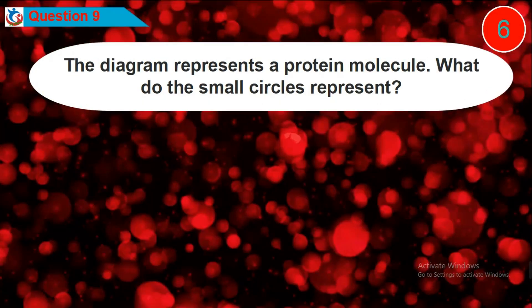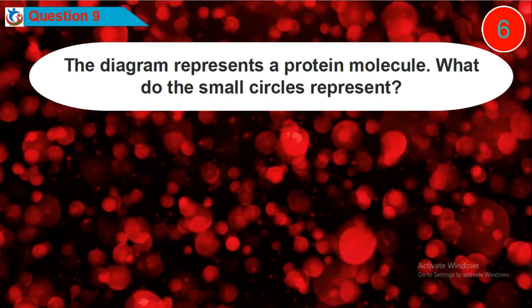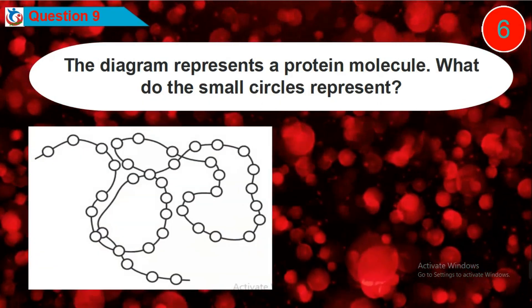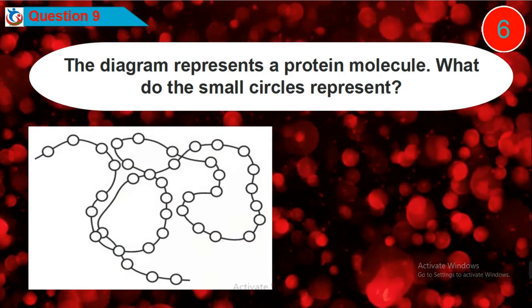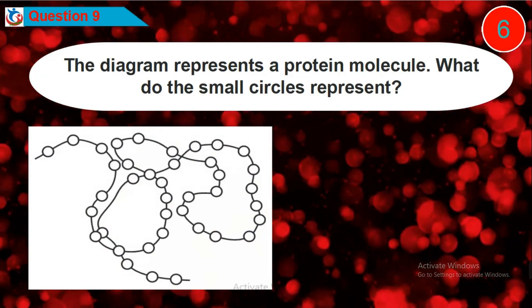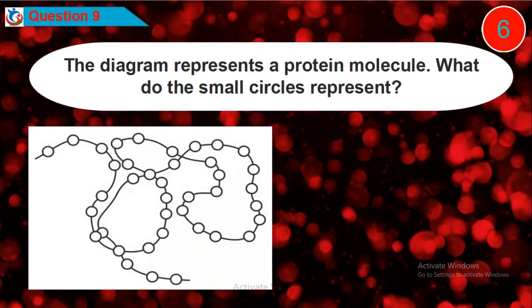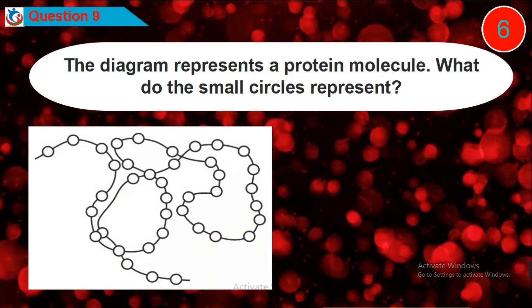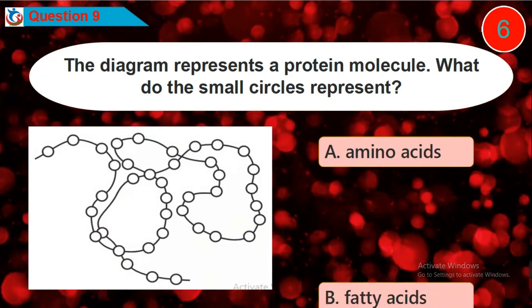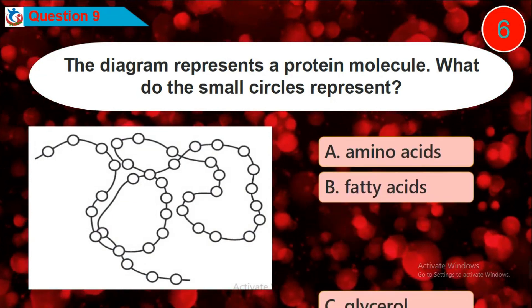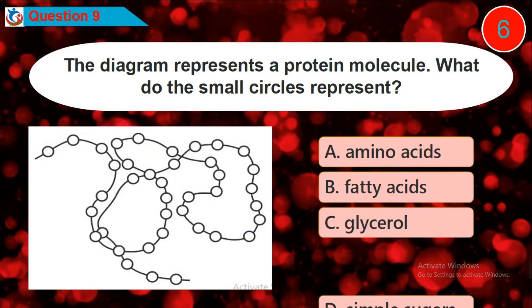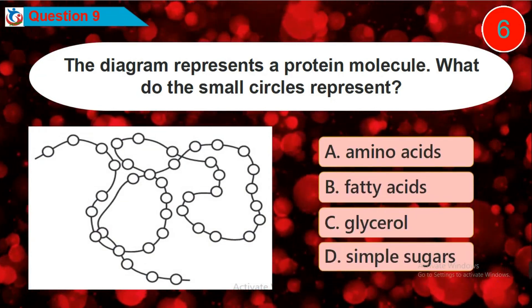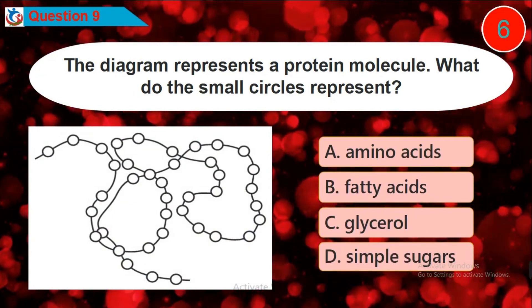Question 9: The diagram represents a protein molecule. What do the small circles represent? Is it option A, B, C, or D?